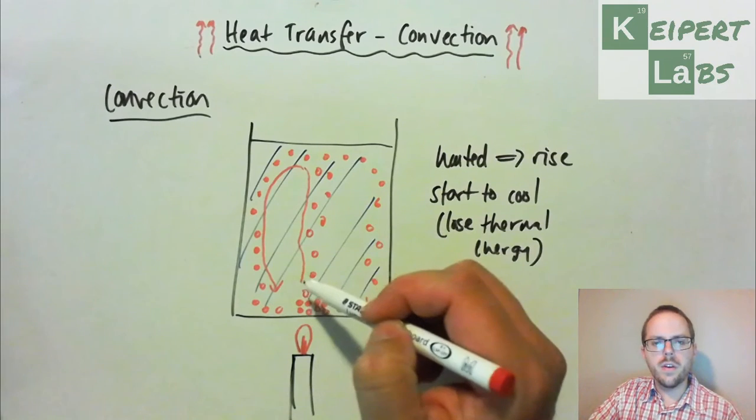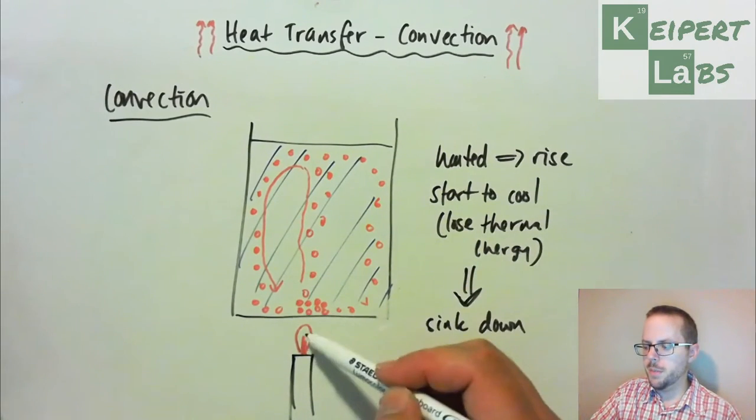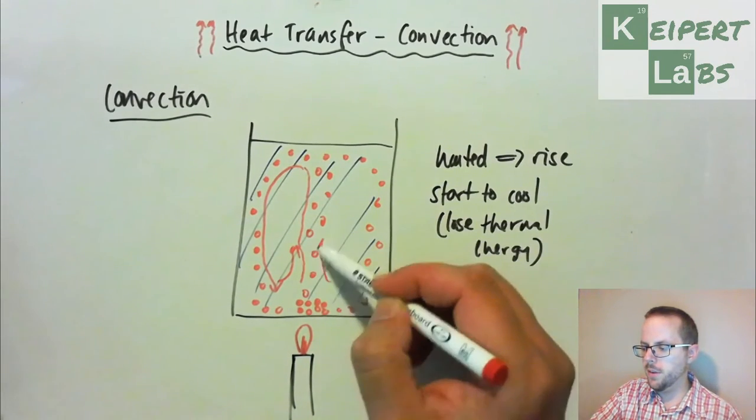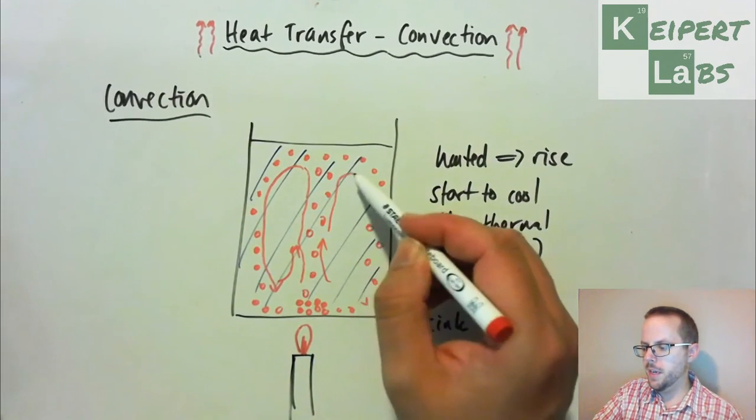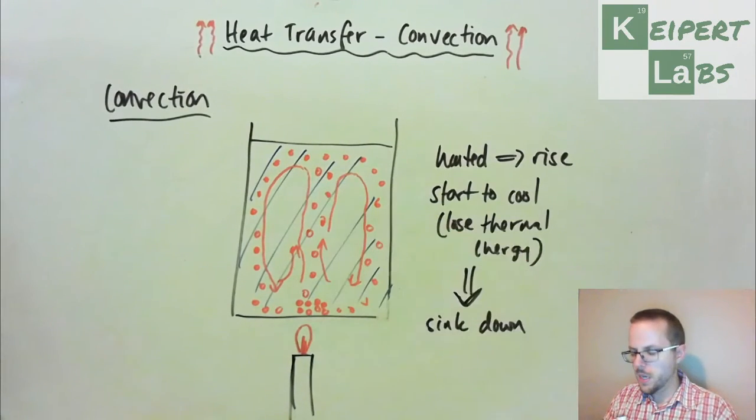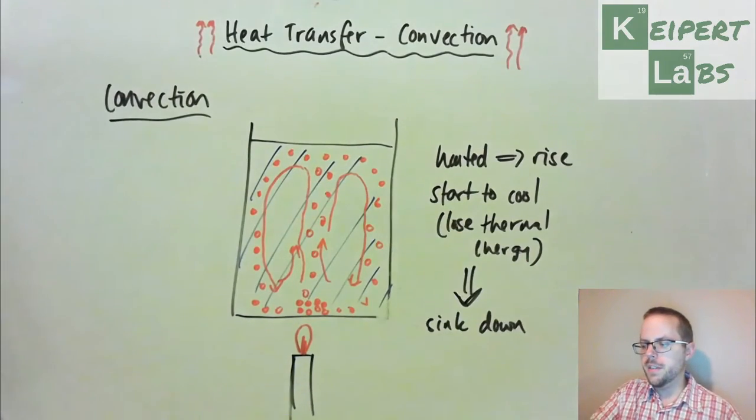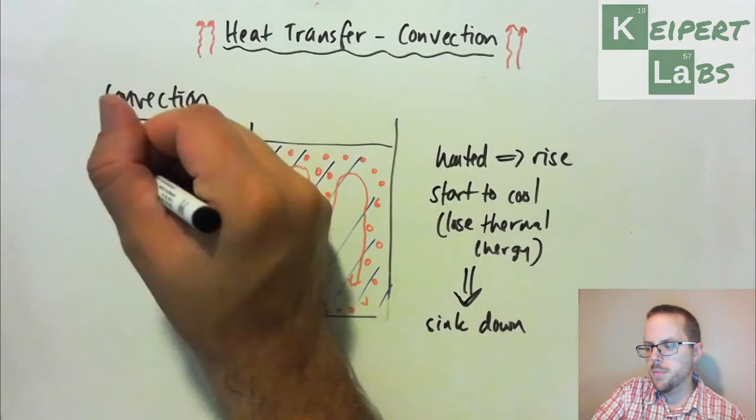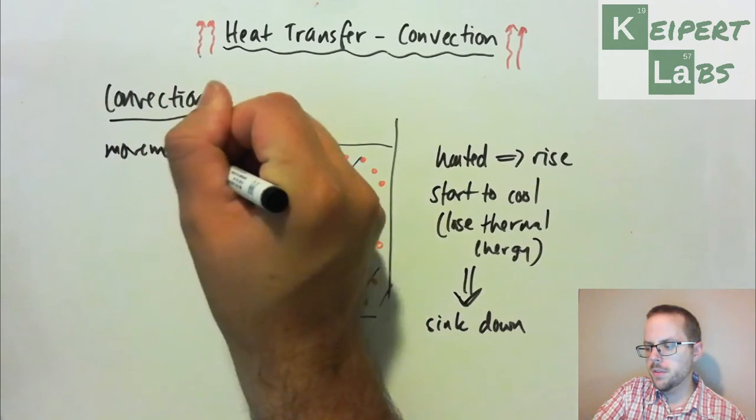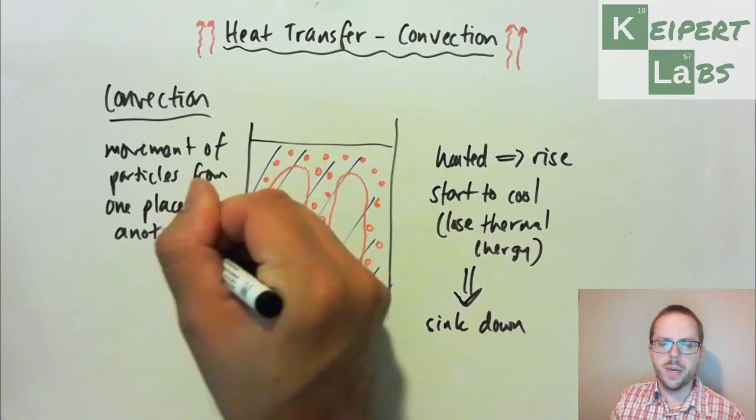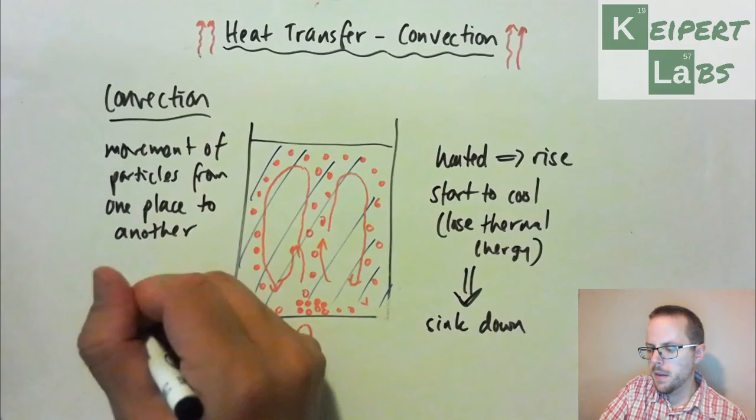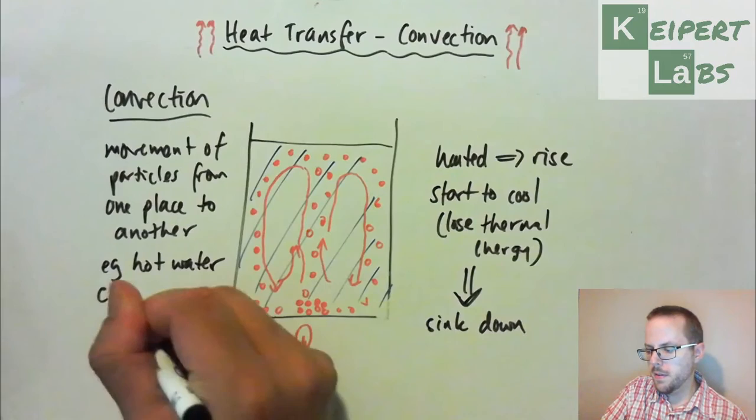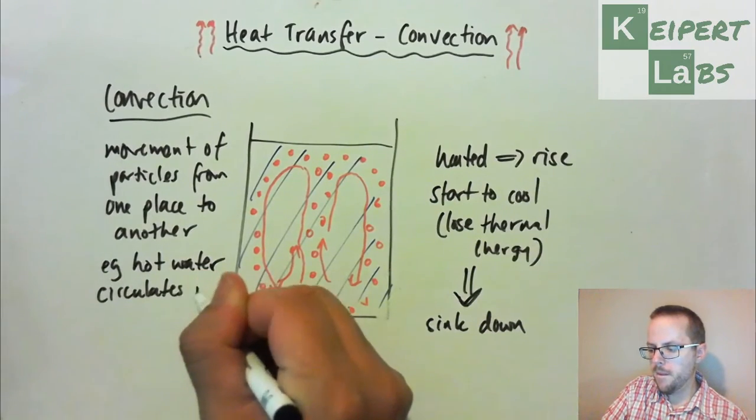So we go around and down, and then this cycle continues. And we call this idea of heat transfer by convection. So it's transferring thermal energy by movement of particles from one place to another. For example, hot water circulates in our beaker.